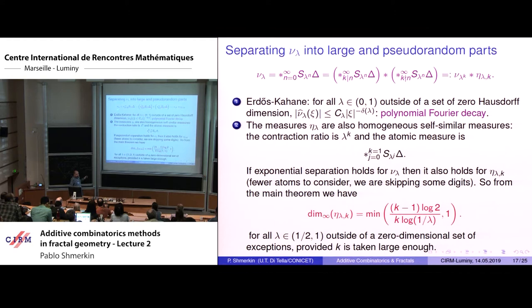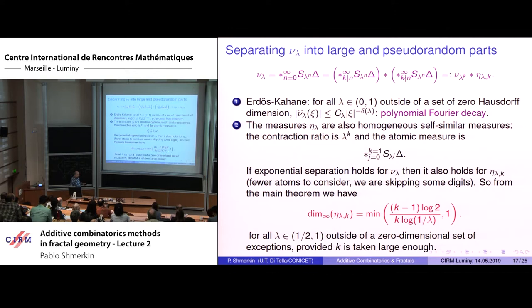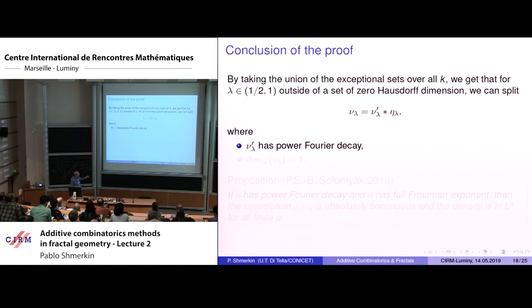These measures also fit into the setting of homogeneous self-similar measures, so we can apply the main theorem. If lambda has exponential separation, it is easy to see exponential separation persists here too, because we are throwing away some digits, giving fewer atoms to consider. Applying the main theorem, we know the Frostman exponent, which depends on k. We need k to go to infinity because we need this exponent to be one — for every lambda > 1/2, if k is large enough, this will be one.